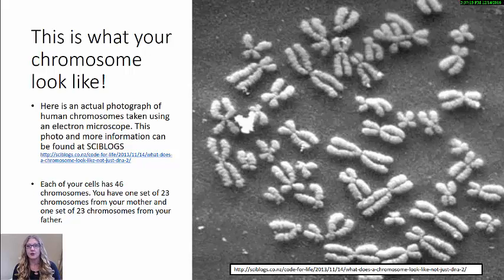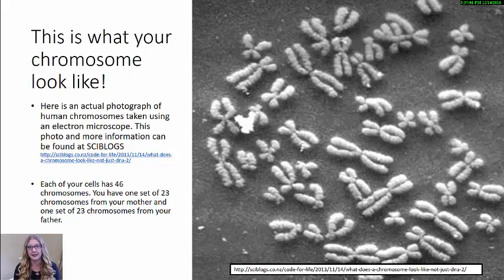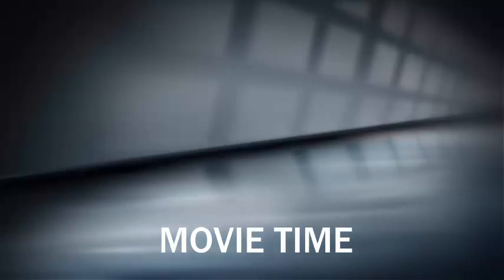You have one set of 23 chromosomes from your mother and one set of 23 chromosomes from your father. This is an actual photograph of human chromosomes taken using an electron microscope. This particular photo was taken from PSI Blogs, and I have the link here if you would like to see this and other pictures, as well as more information on chromosomes.